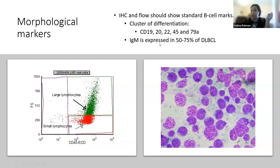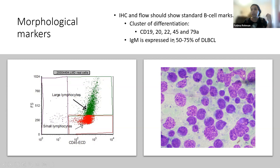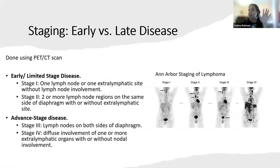For B-cell standard markers, we look for five different CD markers: CD19, CD20, CD22, CD45, and CD79a. CD20 is the main one I'm focusing on because it's also a target for therapy down the road. They also look for IgM expression — typically for a diffuse large B-cell lymphoma classification, at least 50–75% of the cells must express IgM. That was for identification of the cancer type.